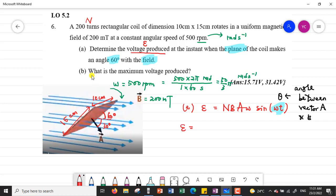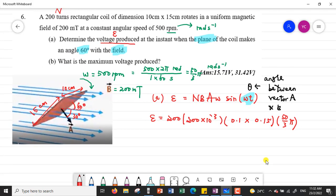Put in the values: the number of turns is 200, the value of B is 200 milliTesla times 10^-3 for milli. Area can be calculated from the dimensions given, 0.1 multiplied by 0.15. The angular velocity is 50 over 3π. The angle between vector A and B will be sin 30. We might pause the video to do the calculation.